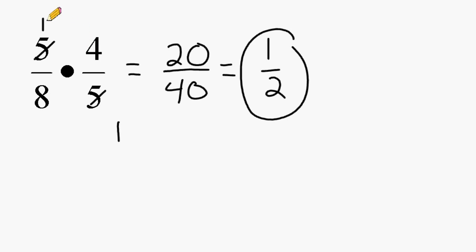So on the top, we have 1 times 4 remaining, which is 4, and on the bottom we have 8 times 1, which produces 8. And we still have a numerator that is exactly half of the denominator, so we may reduce that fraction to 1 half.